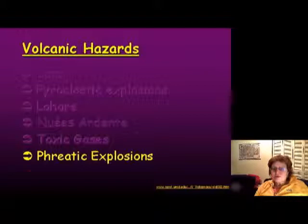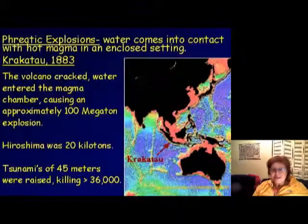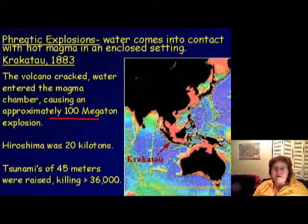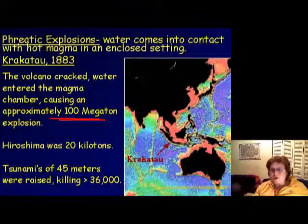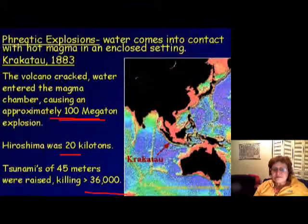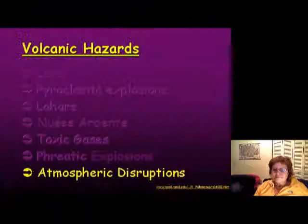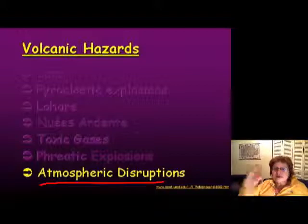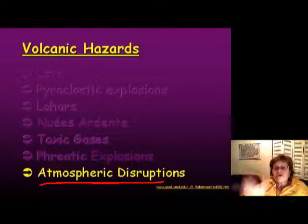The phreatic explosion occurs when water enters the volcano. The most famous example is Krakatoa — about a 100-megaton explosion. By comparison, the Hiroshima nuclear bomb was only 20 kilotons — and one megaton is a thousand kilotons, so 20 kilotons versus 100 megatons is staggering. It killed 36,000 people quickly, and afterward caused atmospheric disruption through aerosols, cooling, and acid rain.